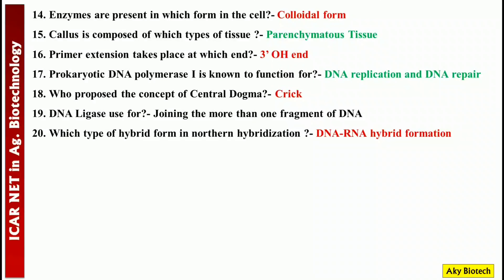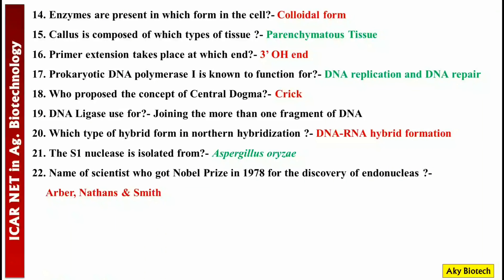Question 20: Which type of hybrid forms in Northern hybridization? — A DNA-RNA hybrid. Question 21: The S1 nuclease is isolated from — Aspergillus oryzae. Question 22: Name the scientists who got the Nobel Prize in 1978 for the discovery of restriction endonucleases — three of them: Arber, Nathans, and Smith.